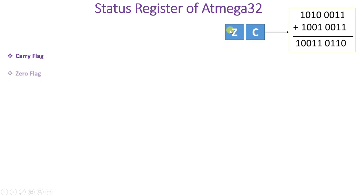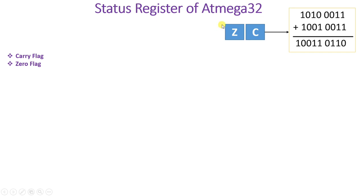The second bit is the Zero flag bit, and this Zero flag indicates the operation results in zero. For example, if you do addition or subtraction and the resultant answer is 0, then the Z flag will get set to 1, else it will be 0. I will show you an example once I conclude this status register with each and every bit, after which we will also see a programming example and how to load the status register.